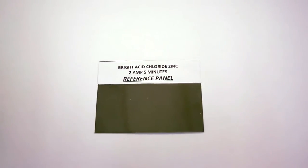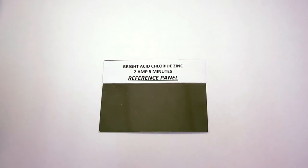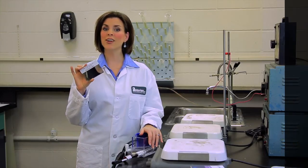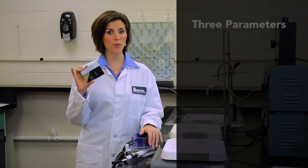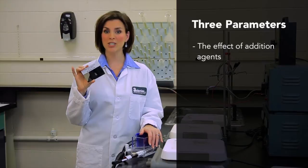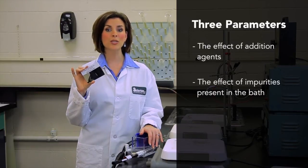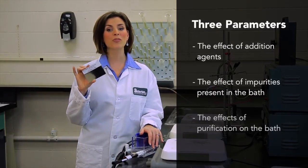A completed hull cell panel shows the range of deposit across a wide range of current densities. The completed hull cell panel provides data on three parameters: the effect of addition agents, the effect of impurities present in the bath, and the effects of purification on the bath.